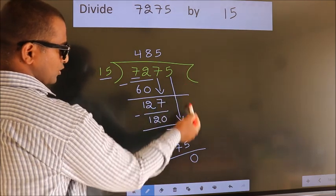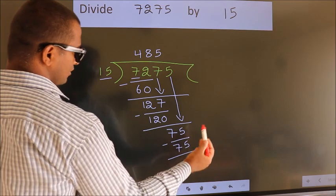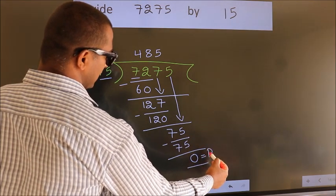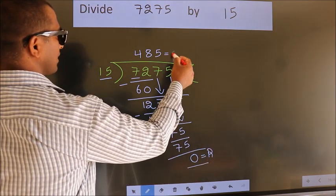No more numbers to bring it down. So we stop here. This is our remainder. This is our quotient.